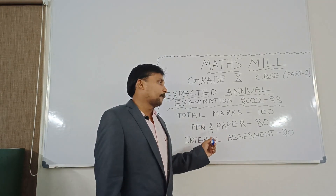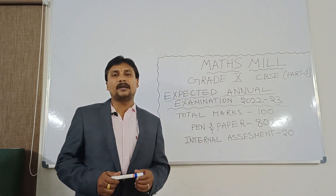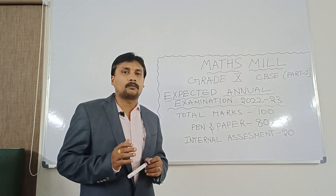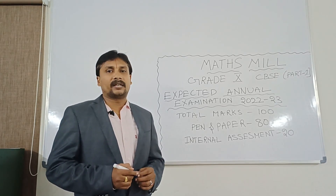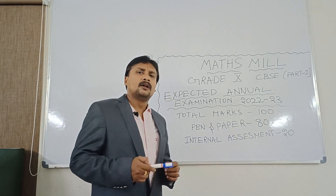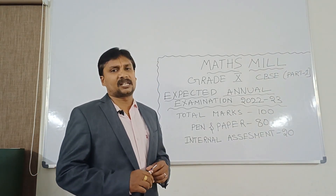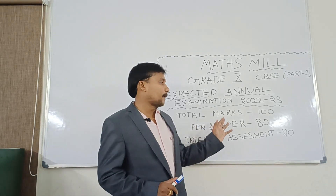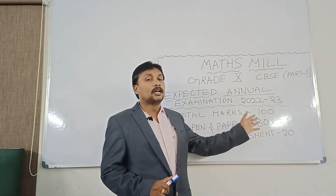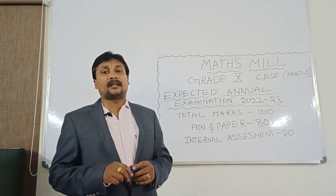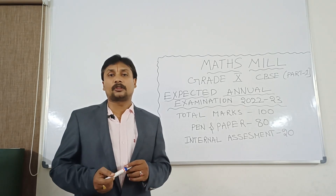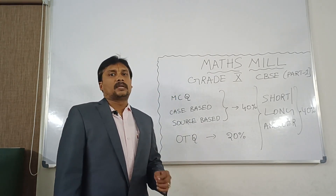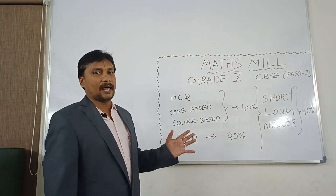Total marks are 100 — pen and paper will be 80 marks, and internal assessment marks will be 20. Compared to last year, 21-22, we had two terms: first term was completely objective and second term was completely subjective. This year it is not like that — this year it is going to be pen and paper 80 marks and internal assessment 20 marks. The expected pattern of this pen and paper from the 10th board we are going to discuss now.